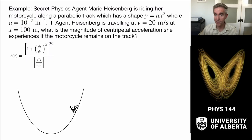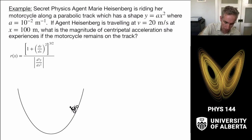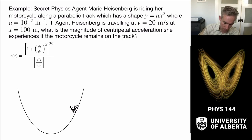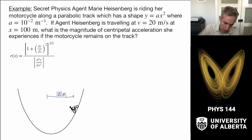In the next problem, we consider what happens if our secret physics agent is now riding her motorcycle along a parabolic track. This parabolic track has the shape y equals a x squared, where a is a constant equal to 10 to the minus 2 per meter — that just makes the units work out. If agent Heisenberg is traveling at 20 meters per second at x equals 100 meters, we want to ask: what is the magnitude of centripetal acceleration she experiences if the motorcycle remains on the track?